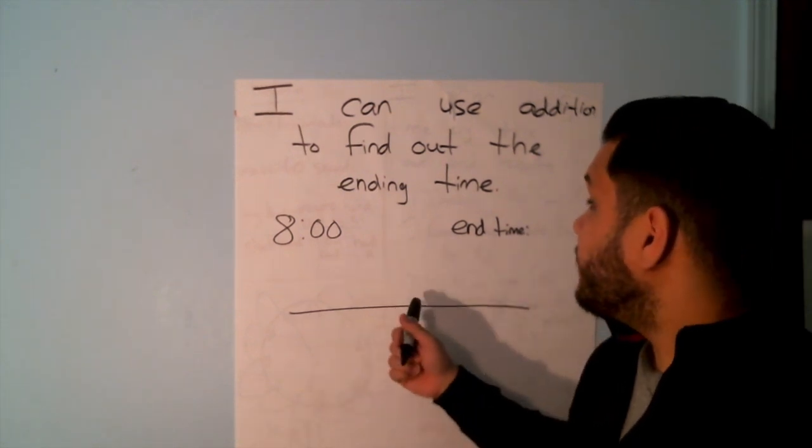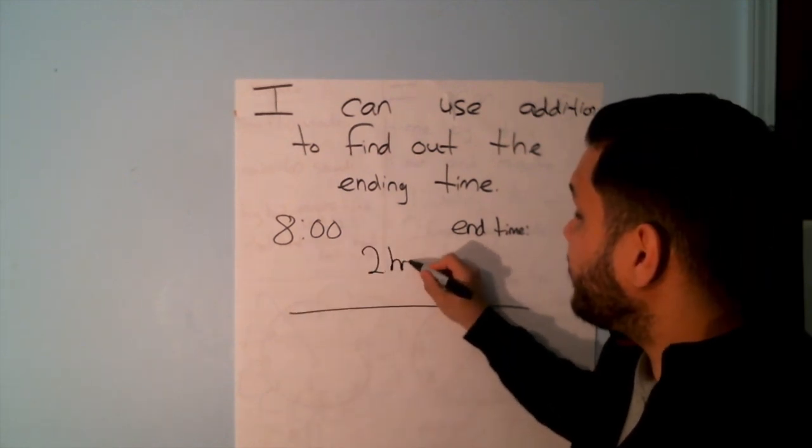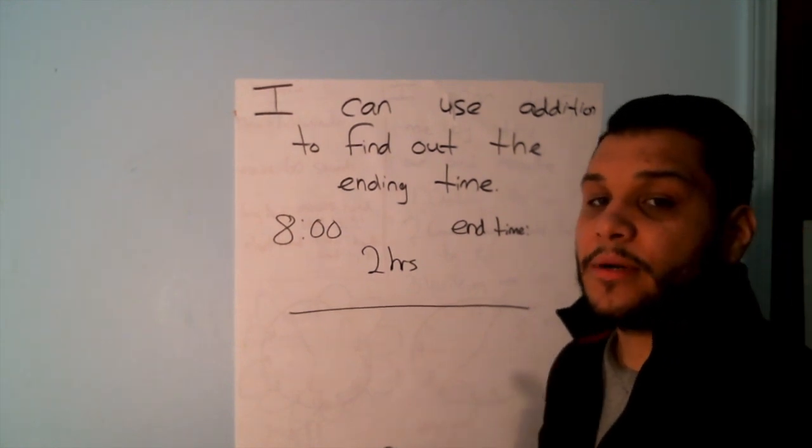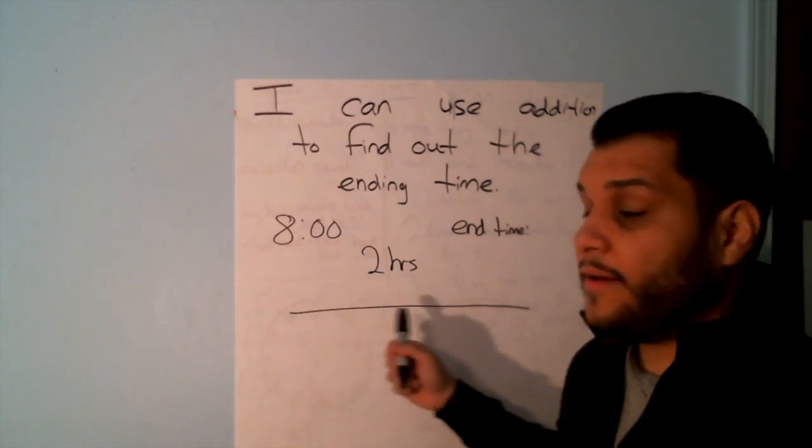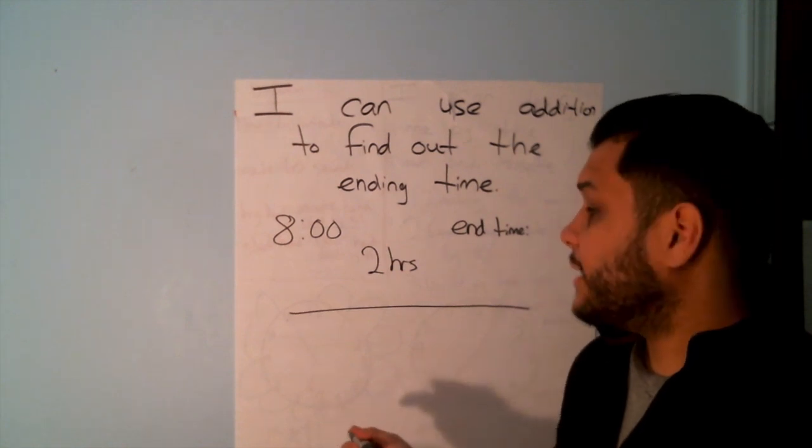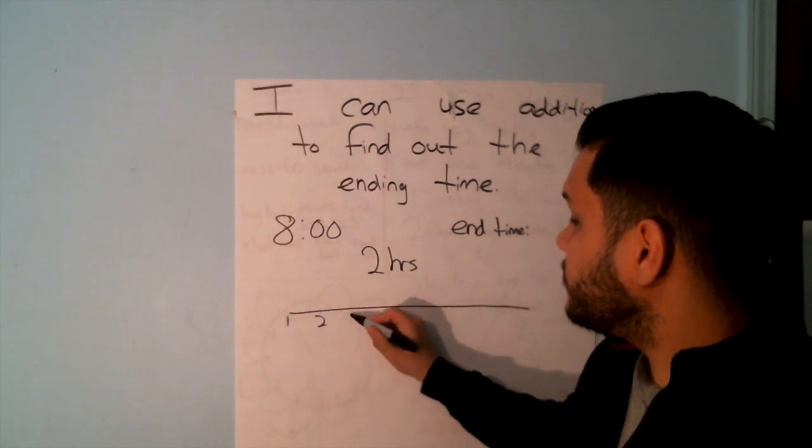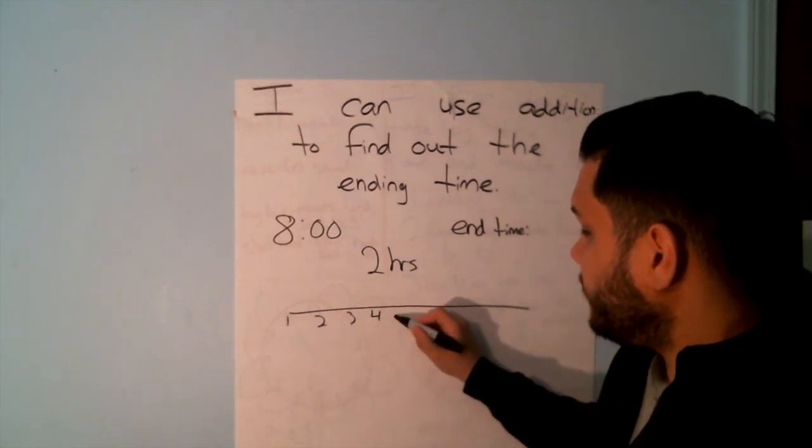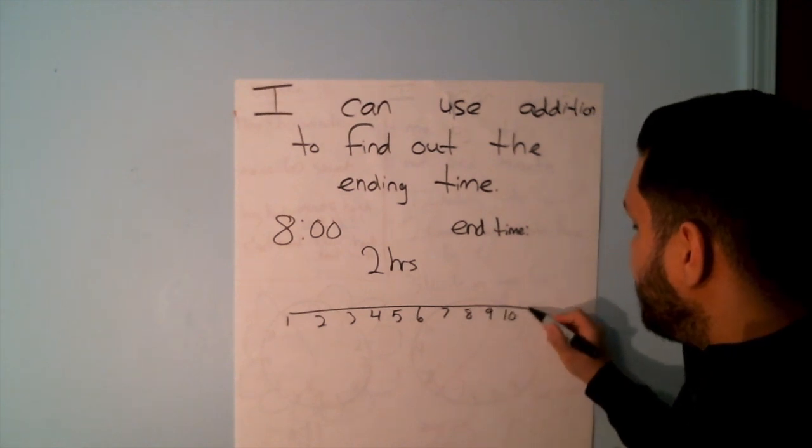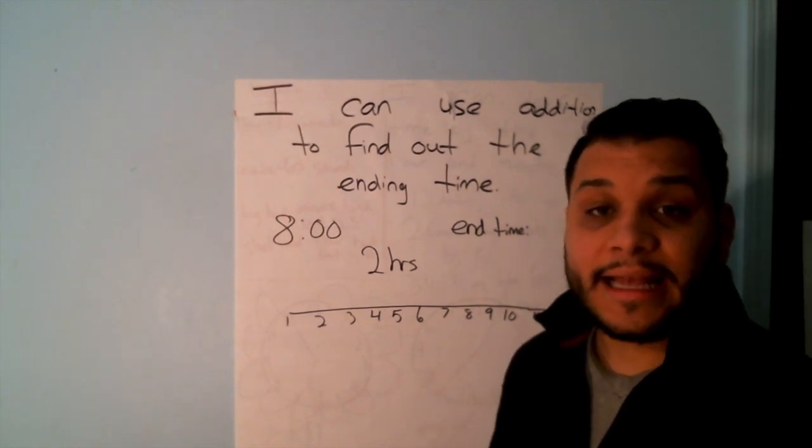Now I know that I'm starting at 8 o'clock. I said that two hours have passed. So what I'm going to do is, just to be safe, I'm going to do my number line starting at 1 and ending at 12. So we have 1, 2, 3, 4, 5, 6, 7, 8, 9, 10, 11, 12. So my starting time is 8 o'clock.